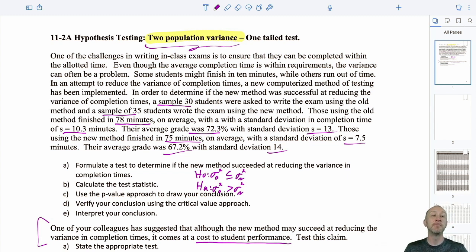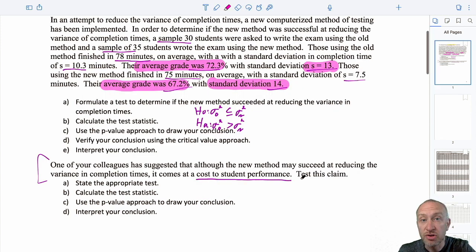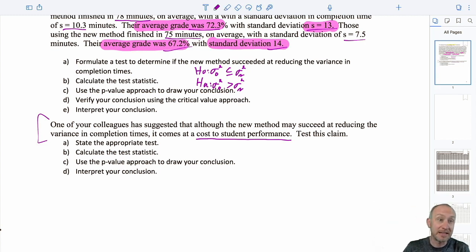If I want to develop a test to see whether or not this has come at a cost to student performance, given the information that I have available to me, the only way that I can possibly test student performance is to look at average grades. So here I've got an average grade with a standard deviation, and here I have another average grade with another standard deviation. So that's the information that I'm going to use. And if I'm comparing two averages, well then this is going to be a t-test.